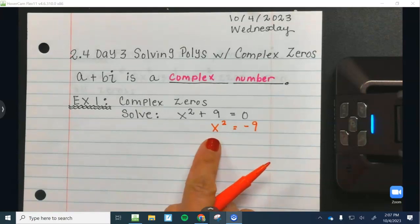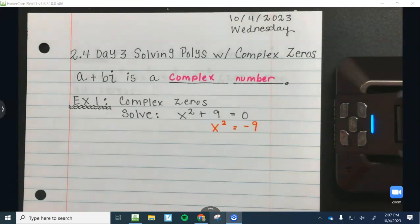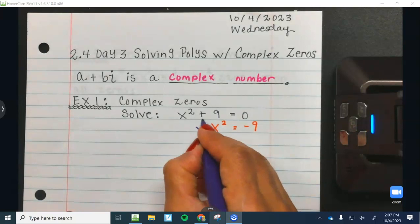And again, we need x to be by itself. It's being squared. What are we going to do to undo that? Yes. And what do you always draw? Plus or minus. Great, great job.